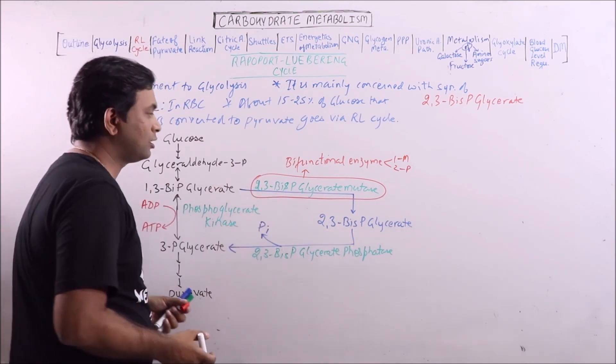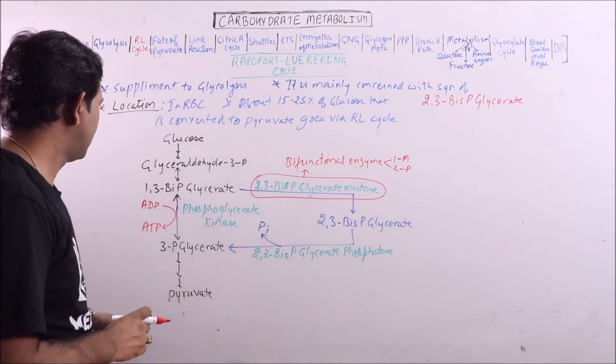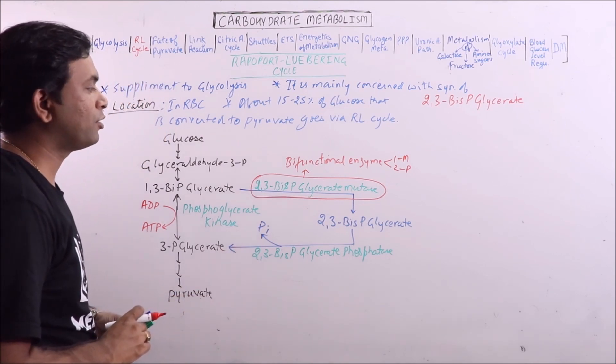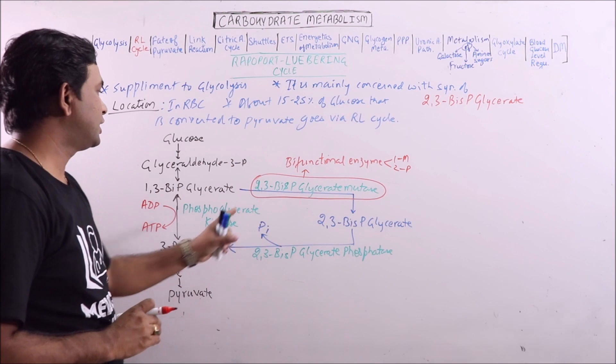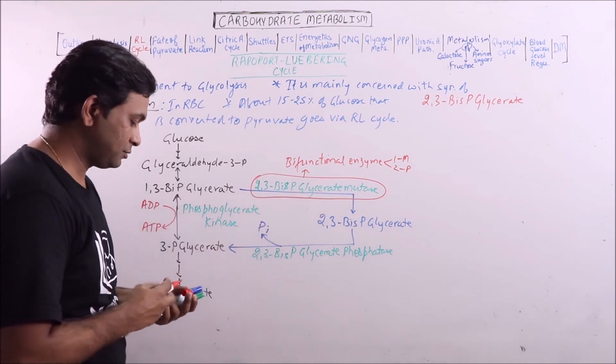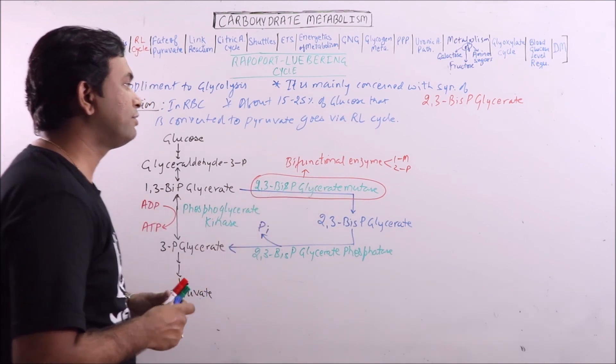So, this shunt or supplement to glycolysis is known as Rapaport-Lubring cycle and it is mediated by 2,3-bis-phosphoglycerate mutase. Now, what is the significance?